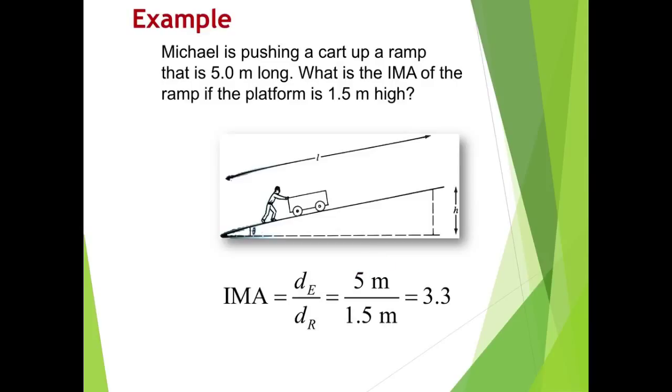And my distance of my resistance is going to be the height of this ramp, or basically the height, the distance that it traveled from the ground to the top of the platform, which is 1.5 meters high. So I plug that into my calculator. 5.0 divided by 1.5. And I get 3.3. So my IMA or ideal mechanical advantage would be 3.3.